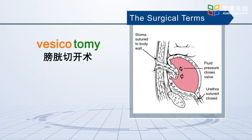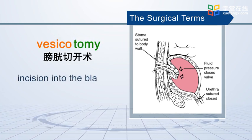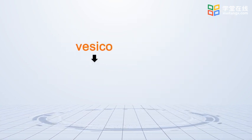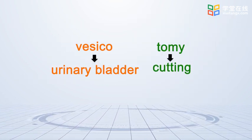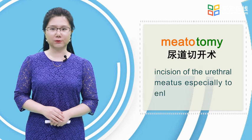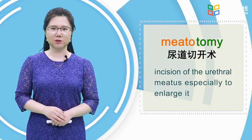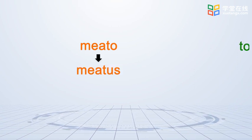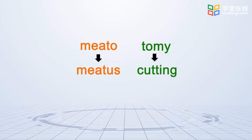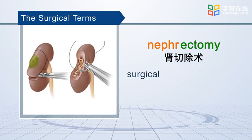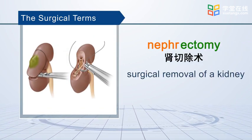Vesicotomy means incision into the bladder. Meatotomy means incision of the urethral meatus, especially to enlarge it.